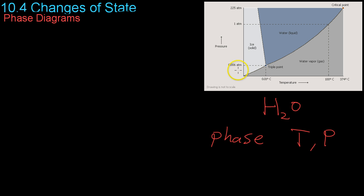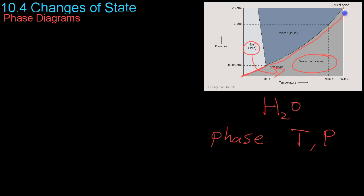For example, you'll notice that below 0.06 atm and 0.01 degrees Celsius along this line here, the water goes from water vapor — shown here in the gray — straight to ice, shown here in the white, and vice versa. This is the point at which sublimation and deposition happen. Similarly, these lines show where boiling and condensing happen, as well as freezing and melting.